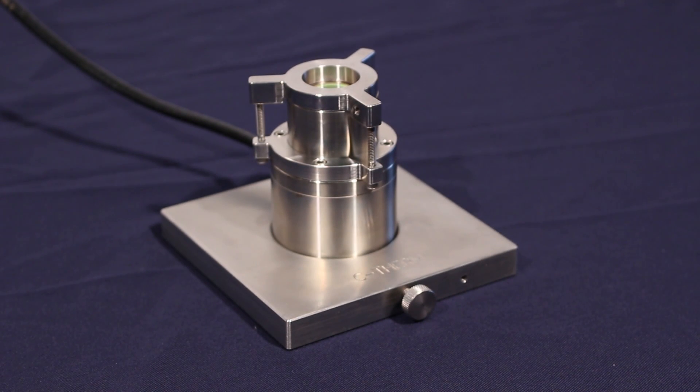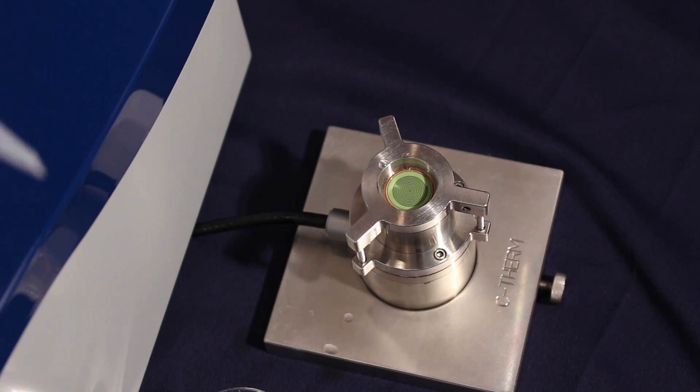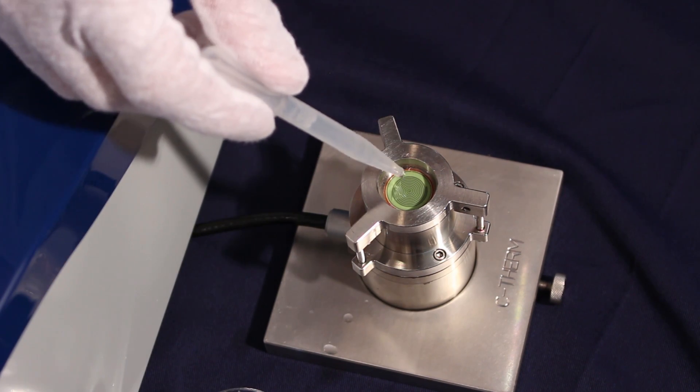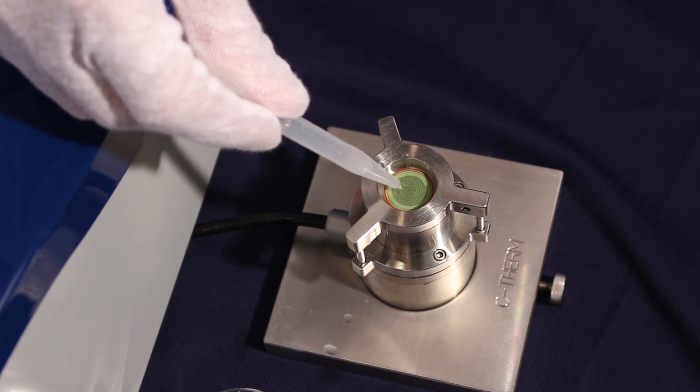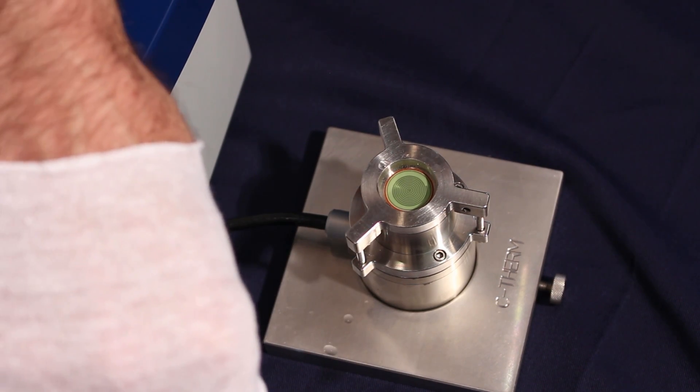So as you can see here we have a small volume test kit which encompasses the sensor itself, creating a void for us to add the liquid. This sensor itself is about 17mm in diameter and we require around 1-2mm of the sample material for effective measurement.